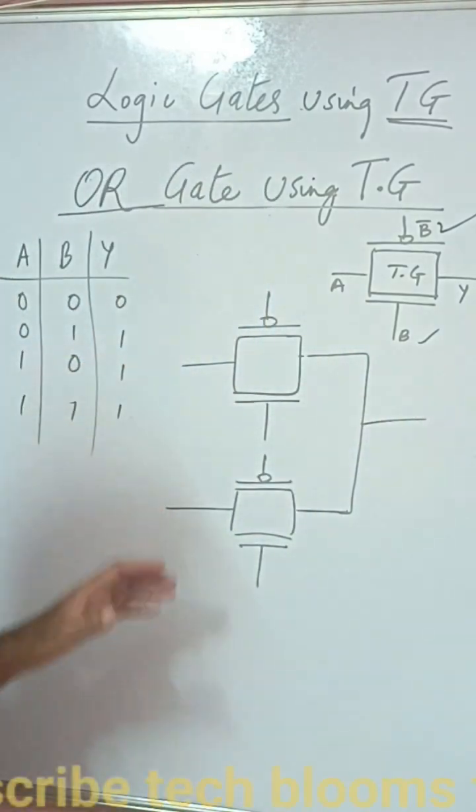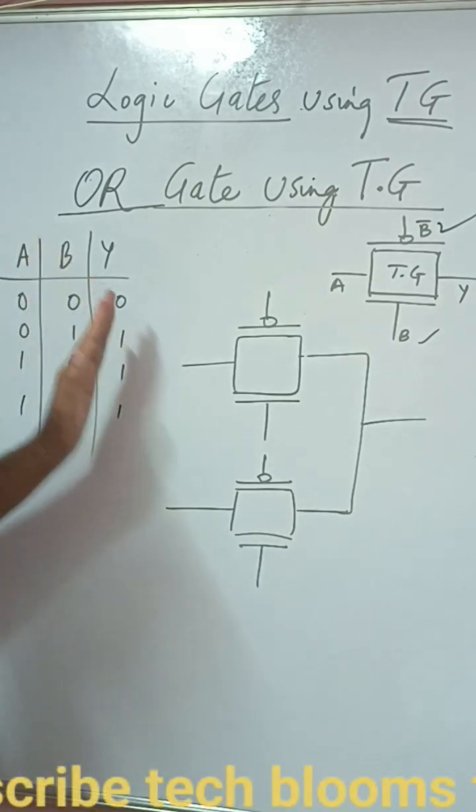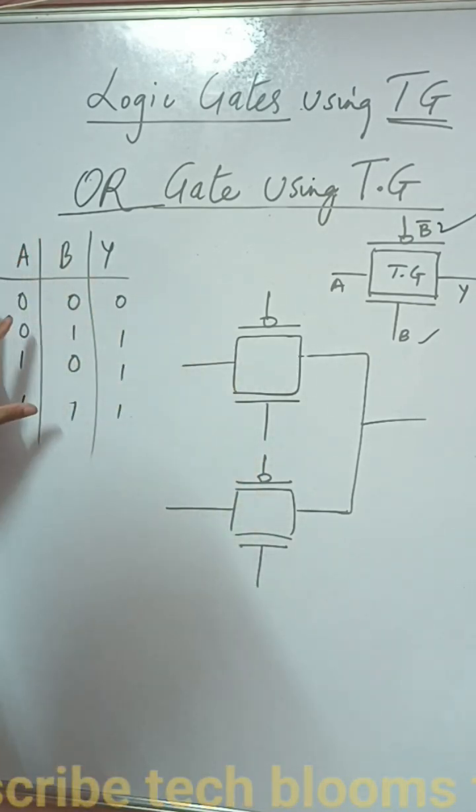As you can see we have the truth table here of an OR gate and as I mentioned already when you have to design a transmission gate you need to check at the input truth table.